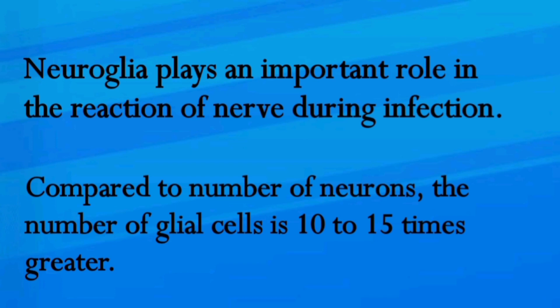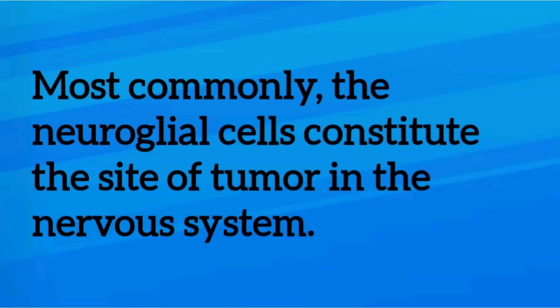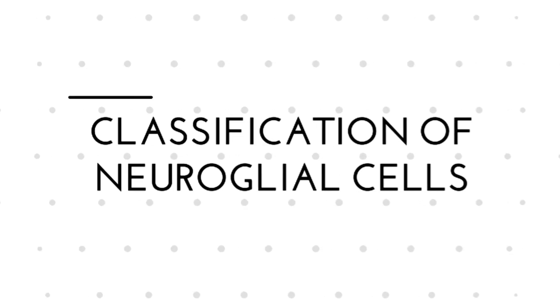When compared to neurons, the number of glial cells is 10 to 15 times greater. Neuroglial cells also constitute the site of tumor in the nervous system.